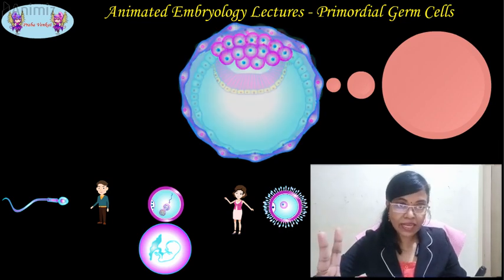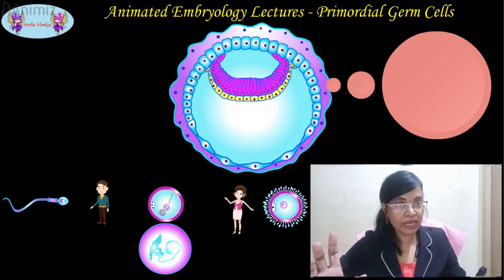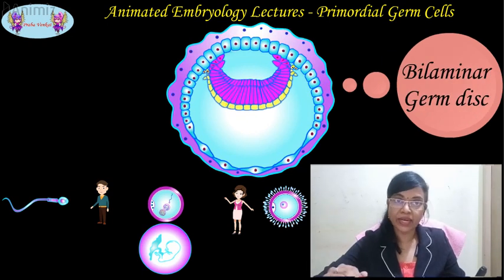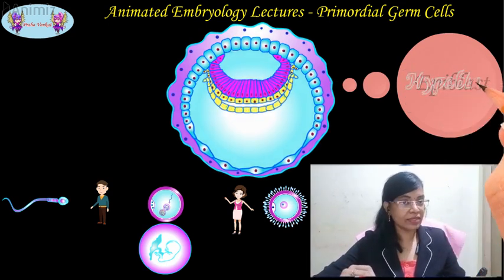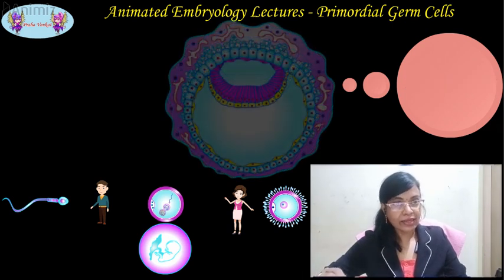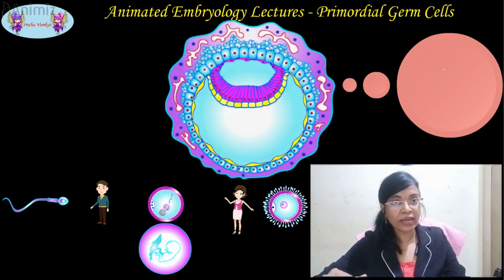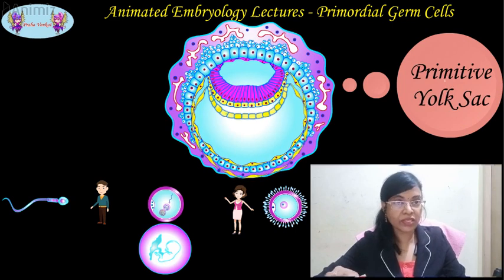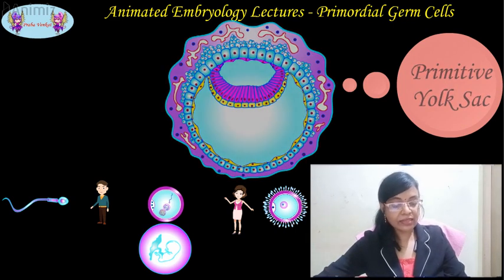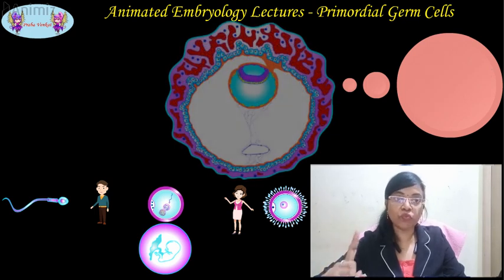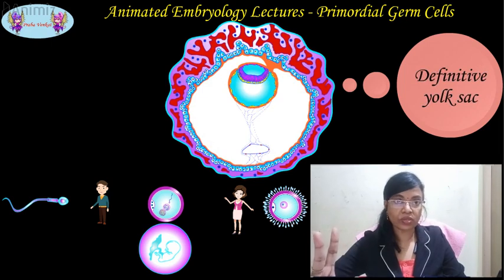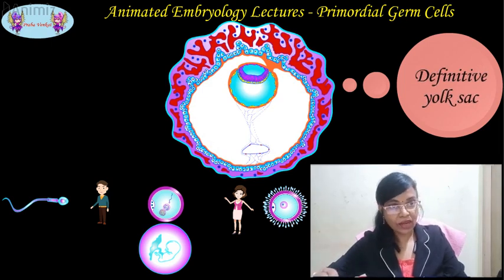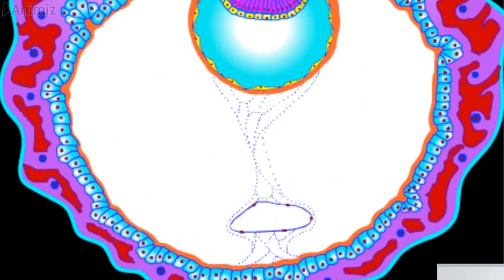By the beginning of the second week, the cells of the inner cell mass are arranged into a double-layered disc-like structure called the bilaminar germ disc. The upper layer of tall cells is called the epiblast and the lower layer is called the hypoblast. By the ninth day, cells of the hypoblast give rise to one more layer below, establishing the primitive yolk sac. By the thirteenth day, the hypoblast layer gives rise to another layer between itself and the primary yolk sac, establishing the secondary — or definitive — yolk sac. The primary yolk sac then gets pinched off and remains as a mass inside the chorionic cavity.